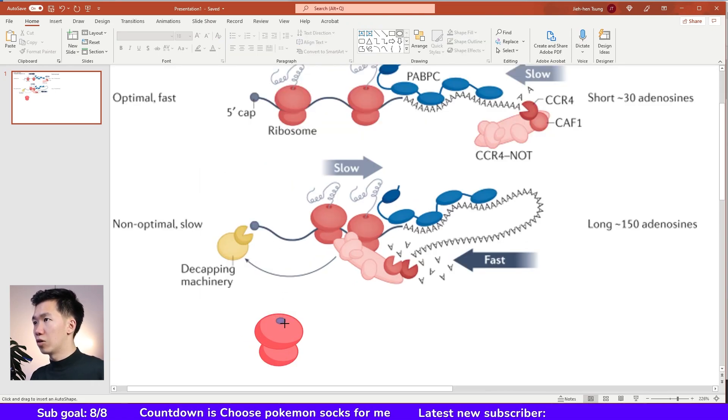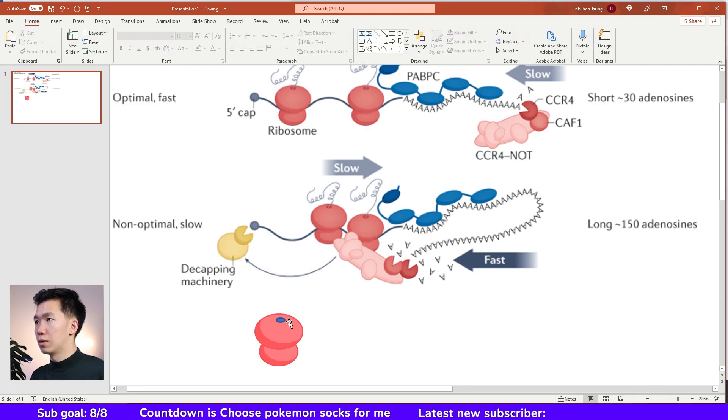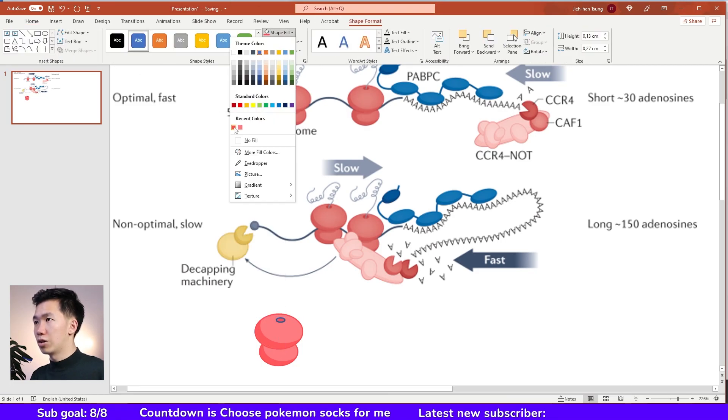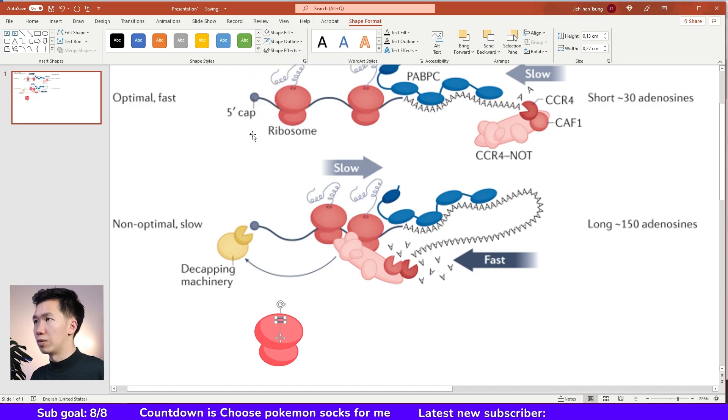Now I will make a very small ellipse on the big subunit. I will give it a dark red and then remove the outline. So this is the location where the polypeptide chain comes out.